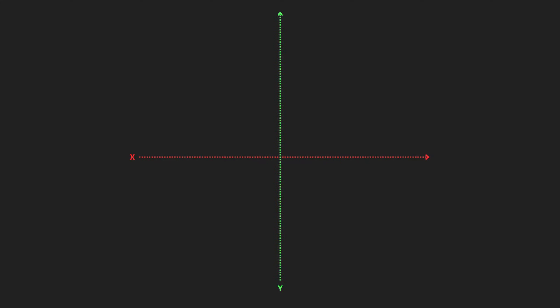So imagine that in 2D, we have this nice triangle and it has a pivot on the origin. Any transformations we apply on our triangle will be relative to its pivot. Now what are transformations? In computer graphics, in order to move our geometry, we apply various operations on each vertex. Those operations are called transformations.